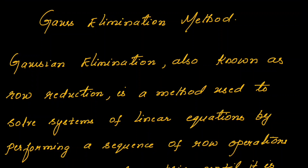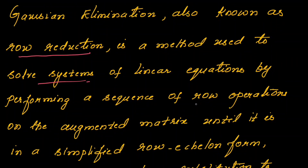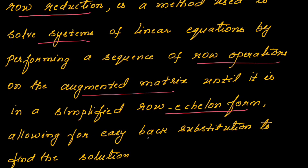Gauss elimination method is also known as row reduction. It is a method used to solve systems of linear equations by performing a sequence of row operations on the augmented matrix until it is in a simplified row echelon form, and you will be carrying out back substitution to find the solution.